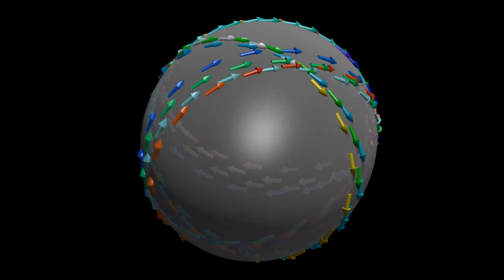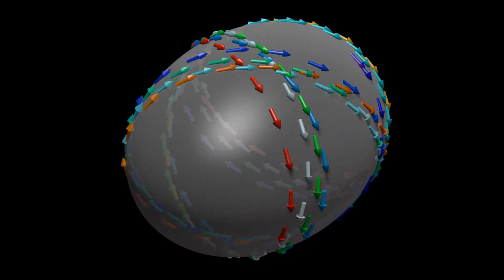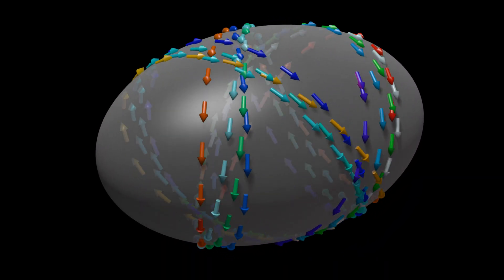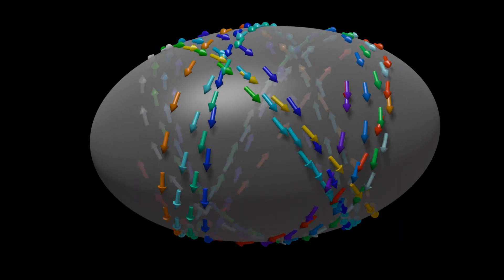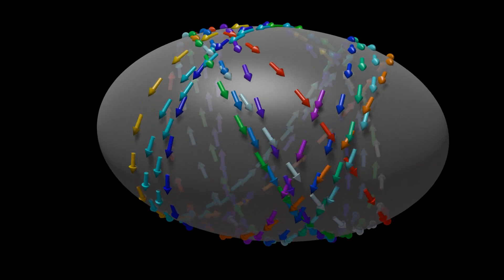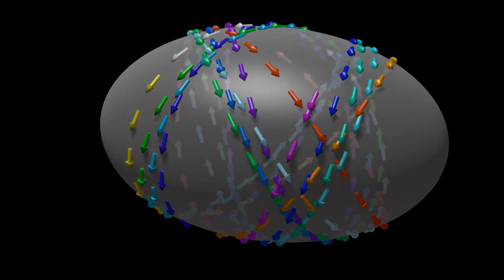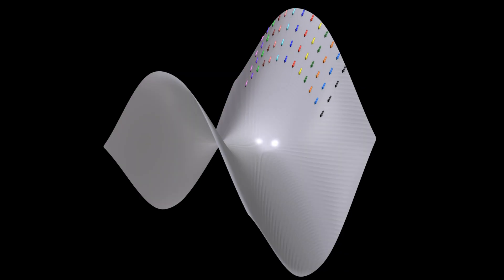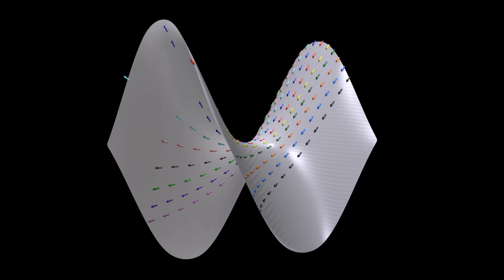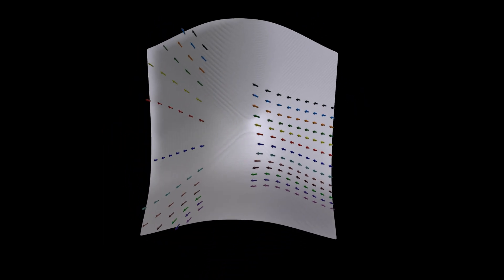Neighboring lines that start out parallel on this surface end up converging. Neighboring lines that start out parallel on this other surface end up diverging. Here, every color once again represents a different geodesic.